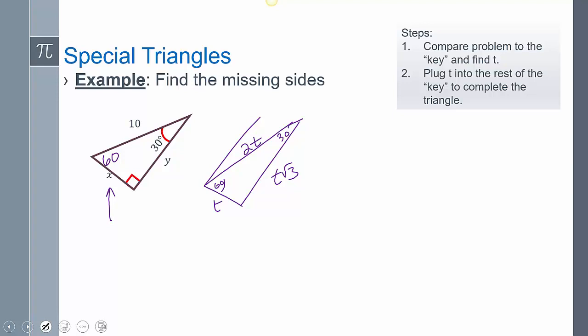So comparing it, this equals T, Y equals T root 3, and 10 equals 2T. So now solving that, I can find what T is here. T is 5. So then plugging it back into both of these, X is going to equal 5, and Y is going to equal 5 root 3.